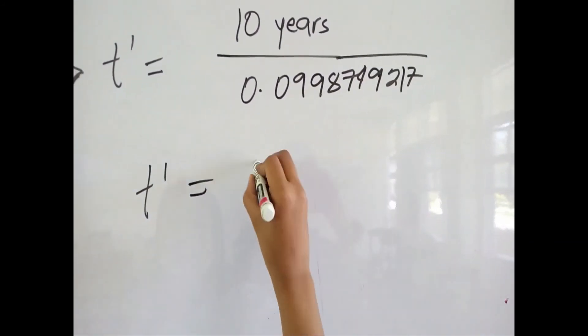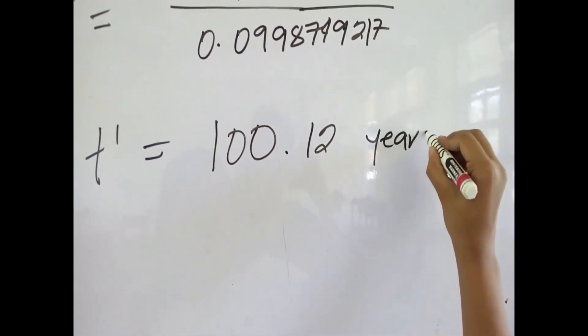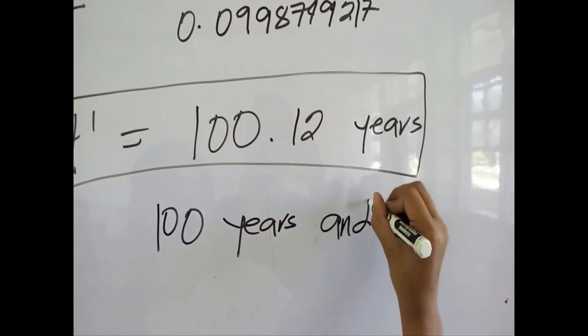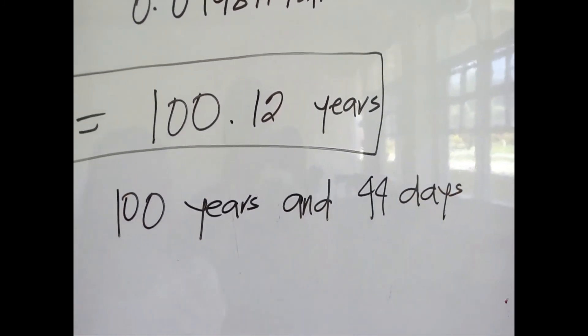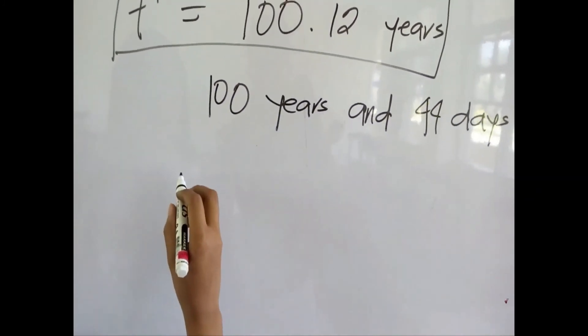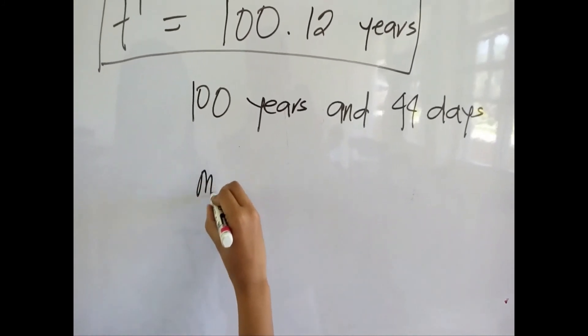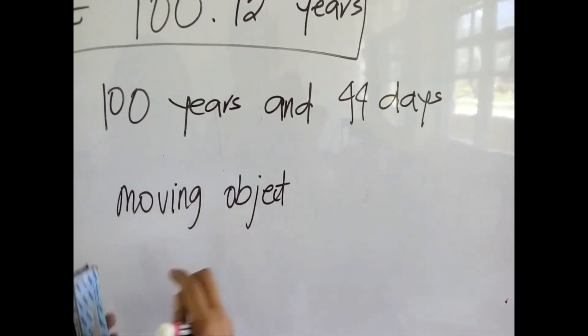So T prime is equal to 100.12 years or 100 years and 44 days. So imagine 10 years had passed in the observer who is in the rocket while here on Earth it is 100 years had passed.